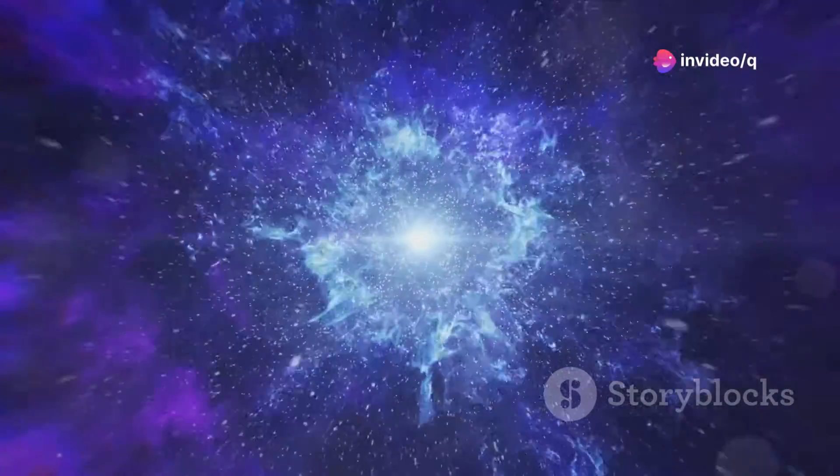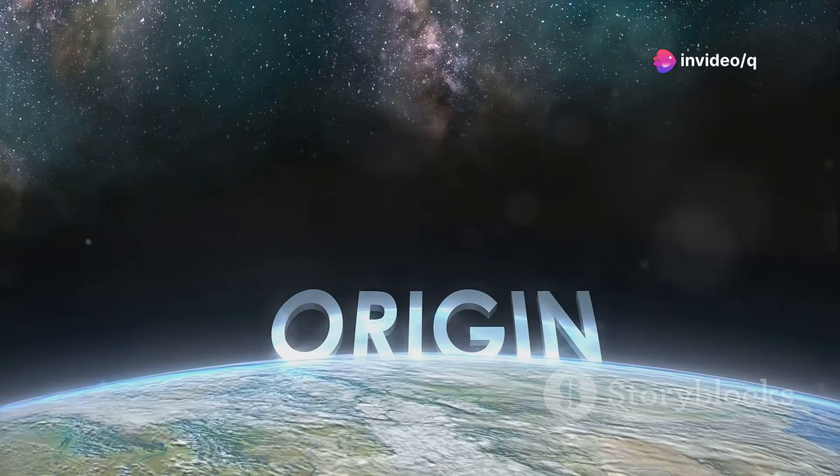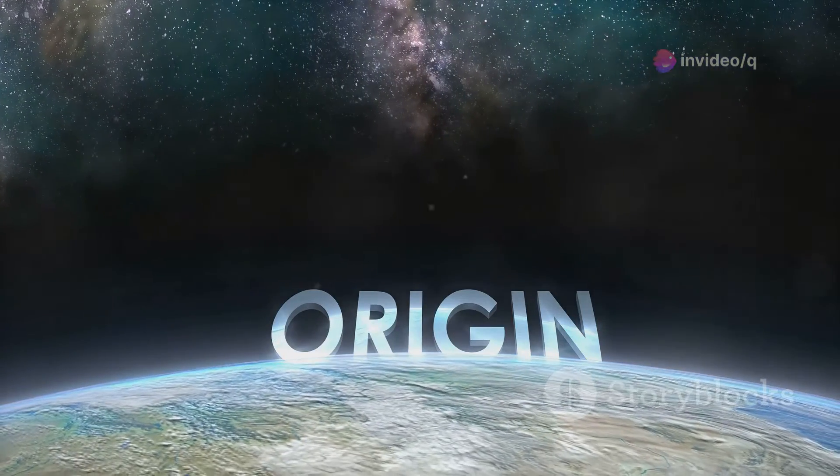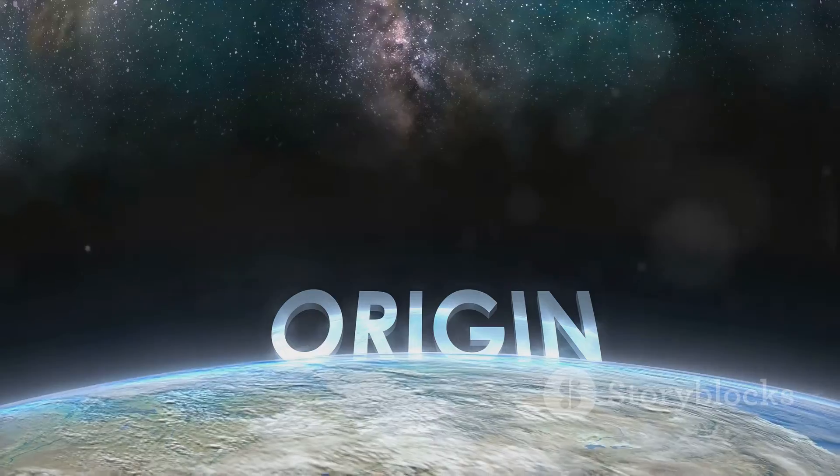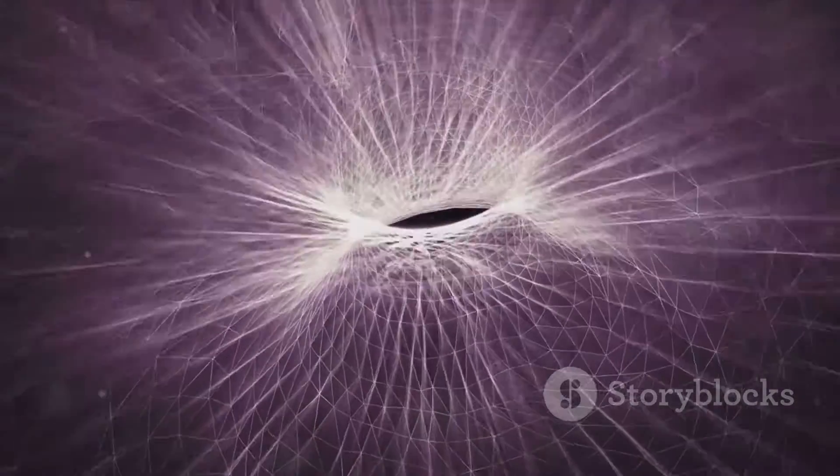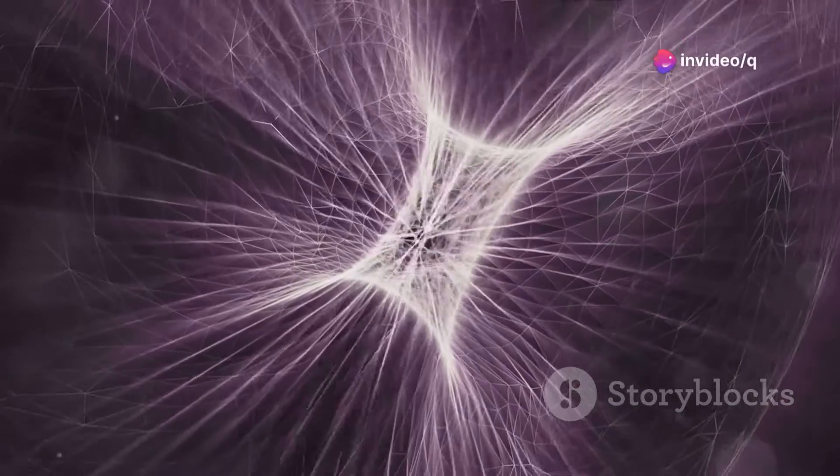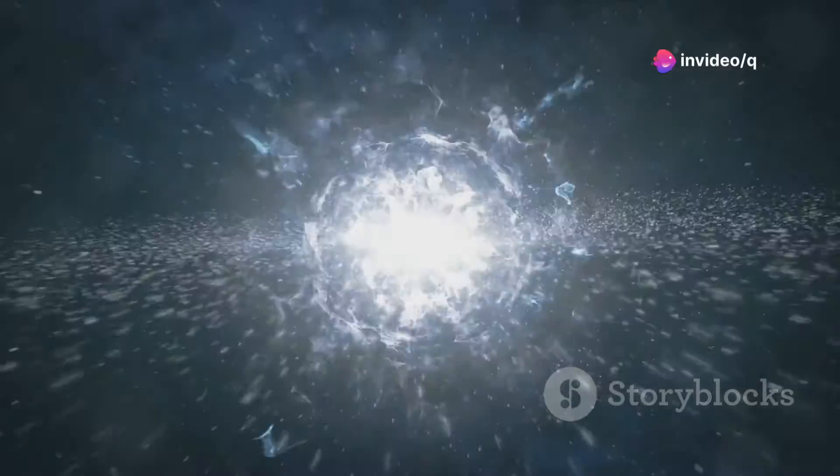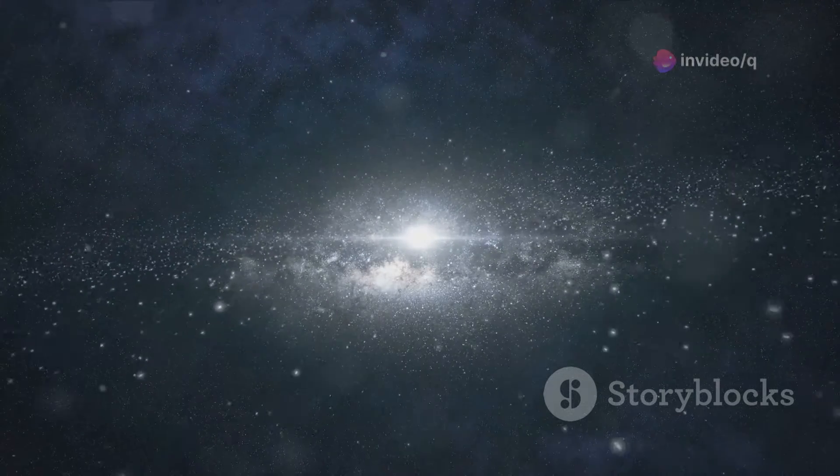So how does the cyclic universe theory differ from the standard Big Bang model? Well, the Big Bang theory suggests that our universe started from a singularity about 14 billion years ago. The cyclic universe theory, on the other hand, proposes that the universe has no beginning or end. The Big Bang was not the birth of the universe, but rather just a transition from one cycle to the next.